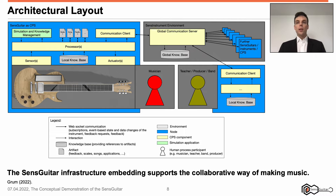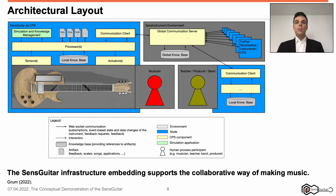Further, in the last session we conquered the infrastructure embedding of the sense guitar. Our interim conclusion was that the sense guitar is interwoven in IoT structures, which technically support the collaborative way of making music. So the sense guitar is not only set up as a cyber-physical system — it is connected with the sense instrument environment that contains an arbitrary number of further devices, sense instruments, and sense guitars. Among them, you can find teachers, producers, and band members connected with the individual musician, enabling real-time interaction.